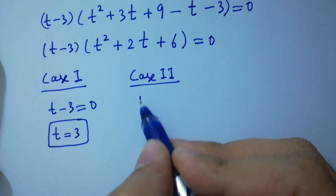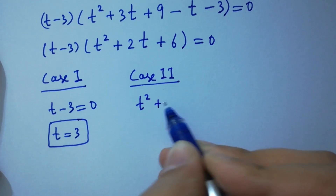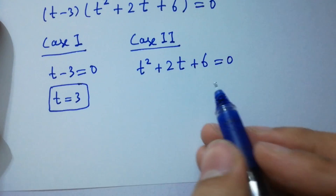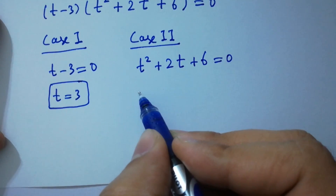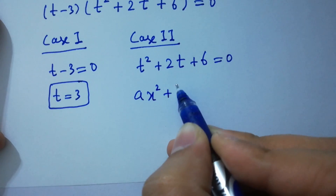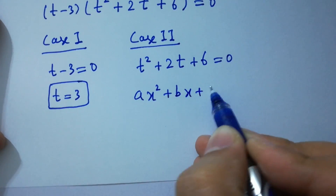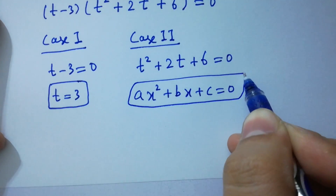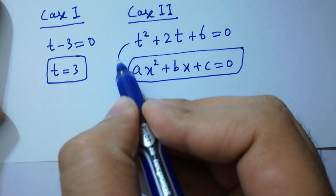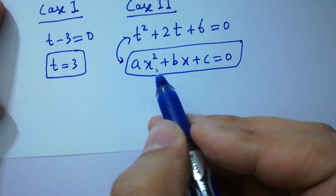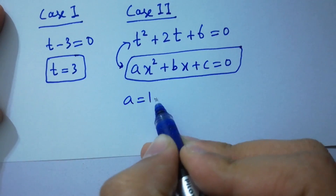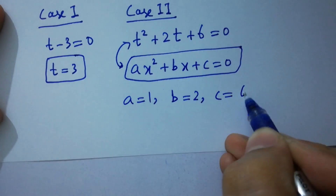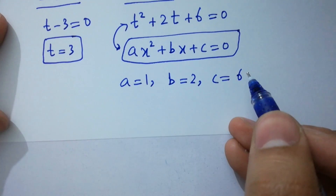In Case 2, we have t squared plus 2t plus 6 equal to 0, which is a quadratic equation of the form ax squared plus bx plus c equal to 0. By comparing, we have a equal to 1, b equal to 2, and c equal to 6. Apply the quadratic formula.